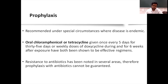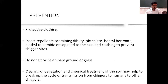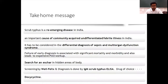Prophylaxis: oral chloramphenicol or tetracycline given once every five days for 35 days, or weekly doses of doxycycline during and for six weeks after exposure. However, antibiotic resistance has been noted in several areas, so prophylaxis cannot be guaranteed. Prevention is better achieved through protective clothing, using insect repellents to avoid chigger bites, not sitting or lying on bare ground or grass, and clearing vegetation and chemically treating soil to break the transmission cycle from chiggers to humans.